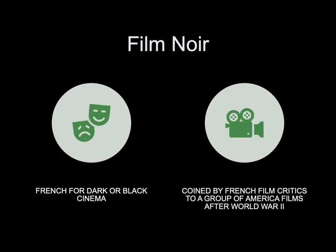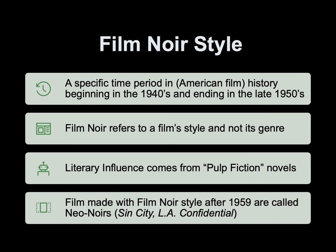The style of film we'll be exploring this week is film noir — French for dark or black cinema. Coined by French film critics to describe a collection of Hollywood films made after World War II, film noir refers to a specific period in American film history beginning in the 1940s and ending in the late 1950s. It refers to a film's style, not its genre. Literary influences come from pulp fiction novels. Films made with film noir style after 1959 are called neo-noirs — examples include Sin City and L.A. Confidential.